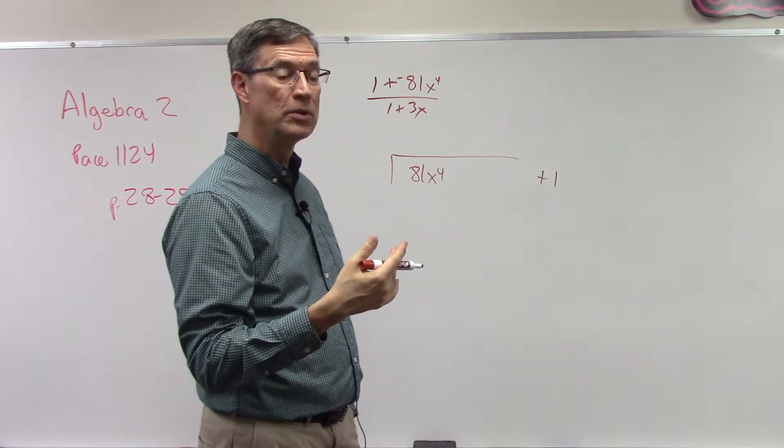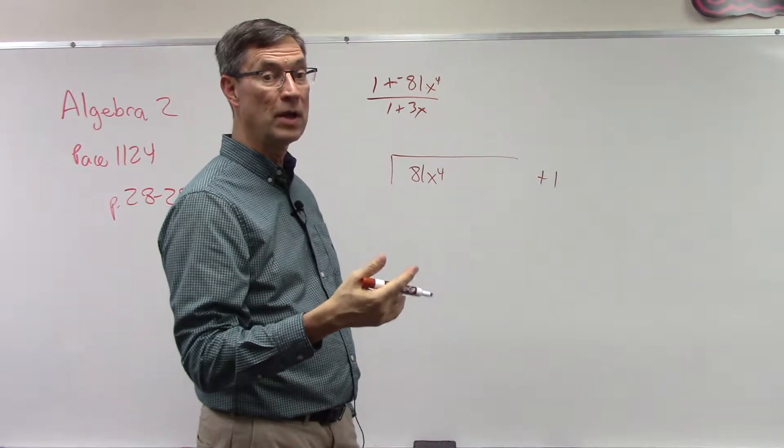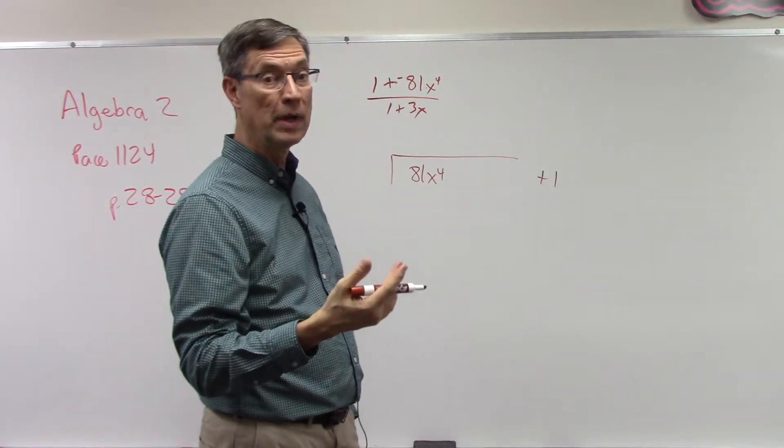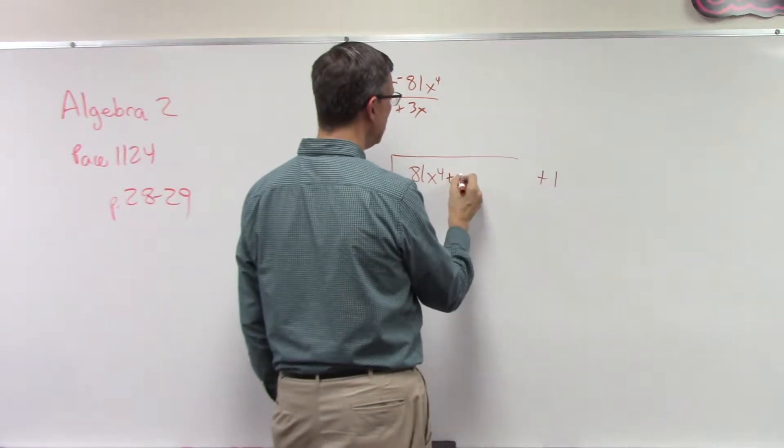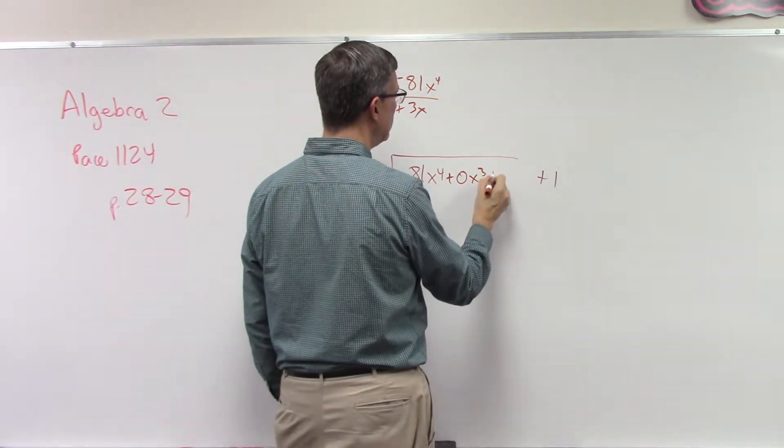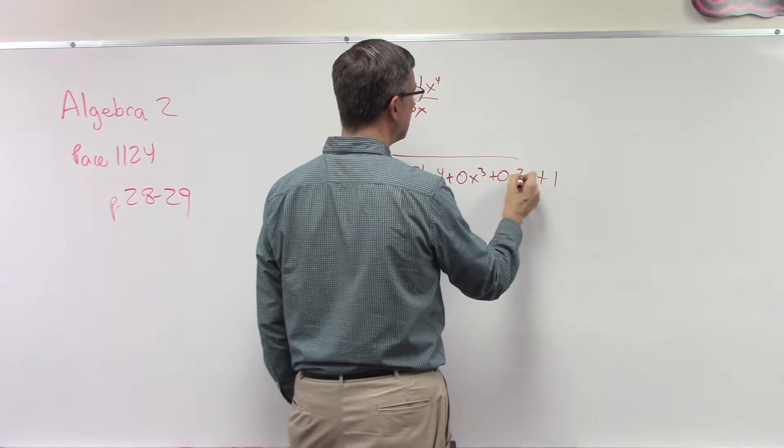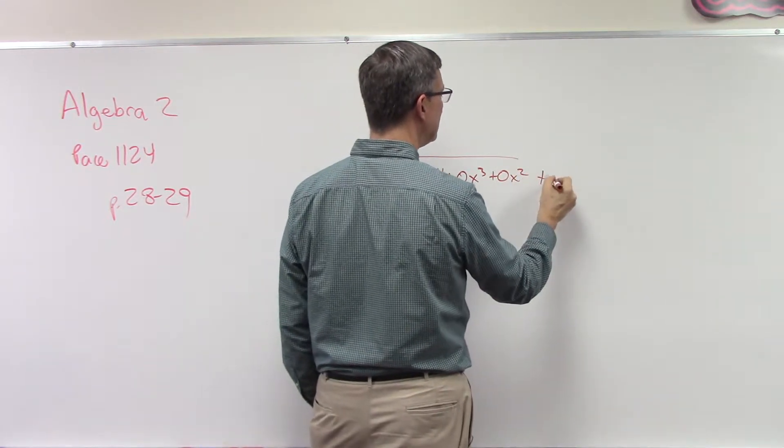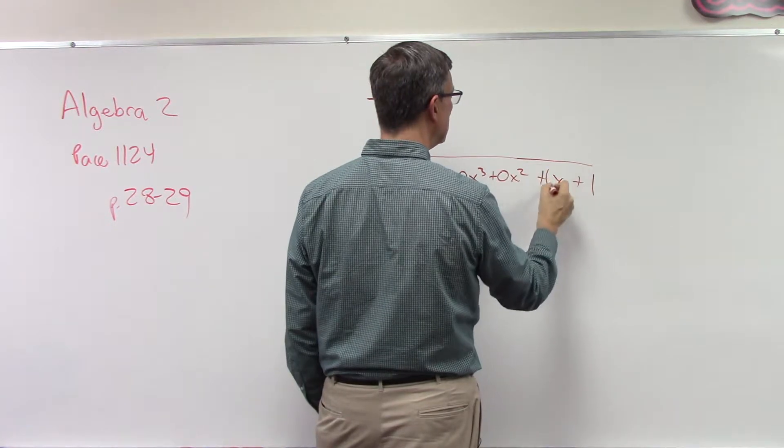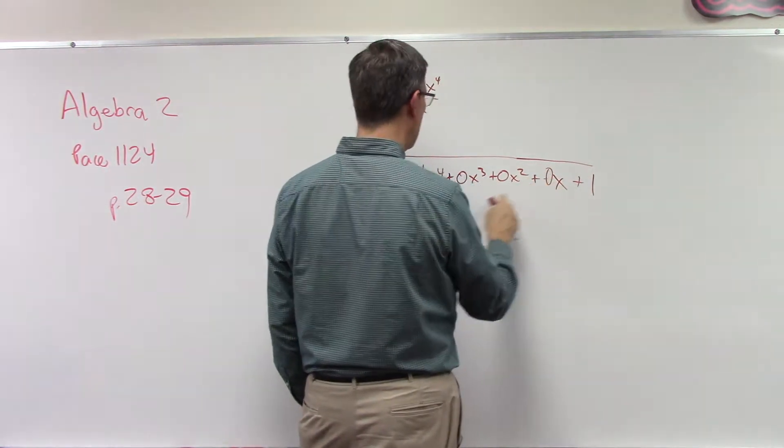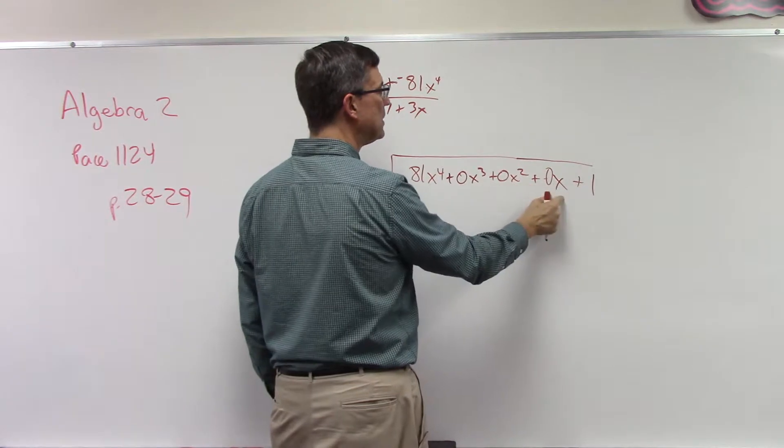Now why do I have a big gap here? Well I don't have all of the variables descending like x to the third, I don't have x squared, I don't have plain old x. So I need to leave space to put in plus 0x to the third, plus 0x squared, plus 0x.